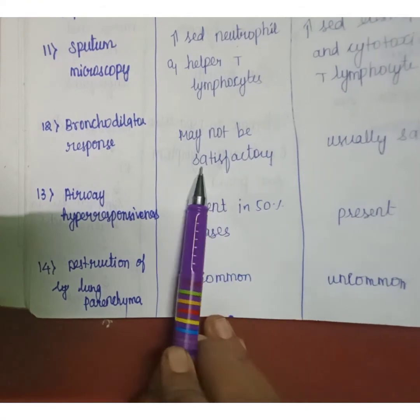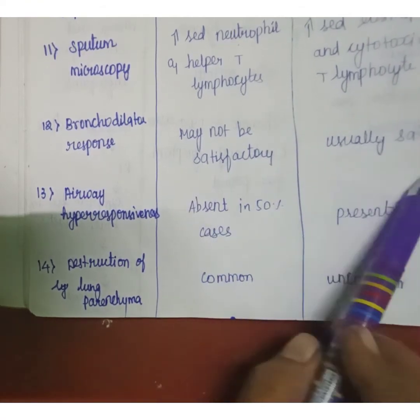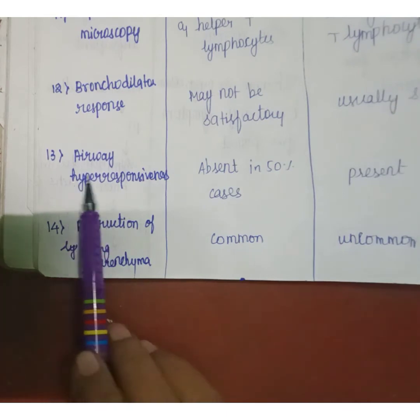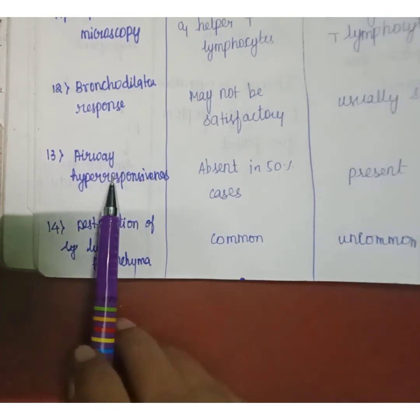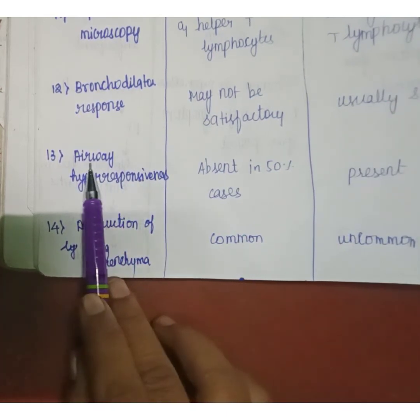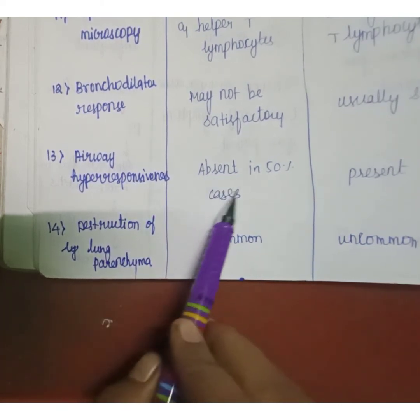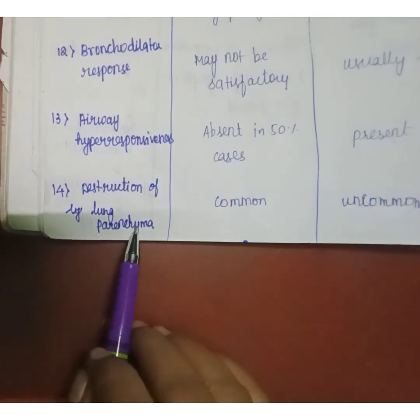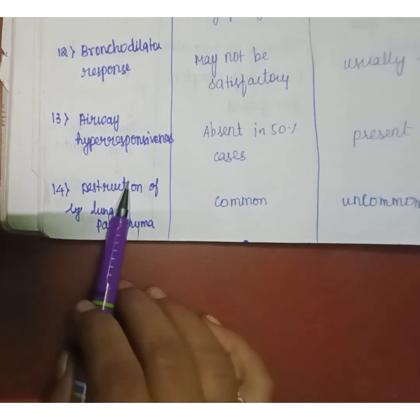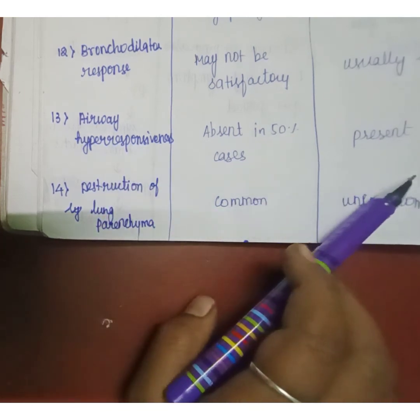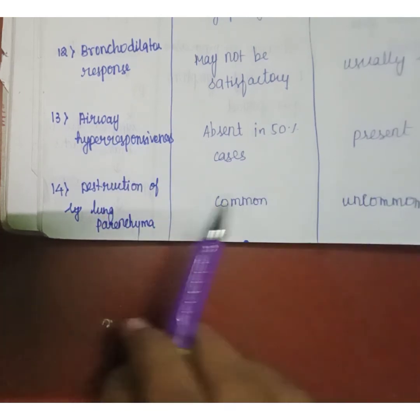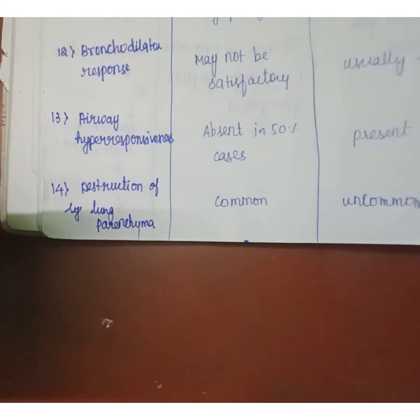For bronchodilator response, in COPD it may not be satisfactory, while in asthma it is usually satisfactory. Airway hyperresponsiveness is absent in 50% of COPD cases but present in asthma. Finally, destruction of lung parenchyma is common in COPD and uncommon in asthma. These are the key differences between asthma and COPD.